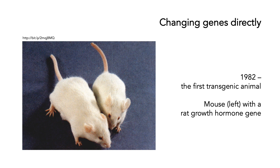The big difference is that now we can change genes directly. So in 1982, scientists made the first transgenic animal. What we're looking at here are two mice, but the mouse on the left has a growth hormone gene from a rat, and so it has grown bigger.